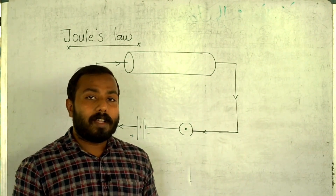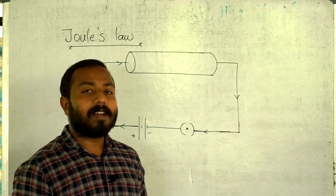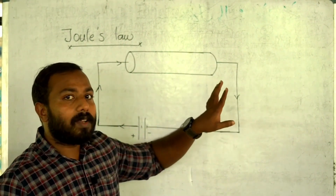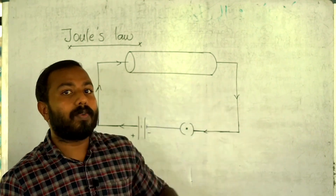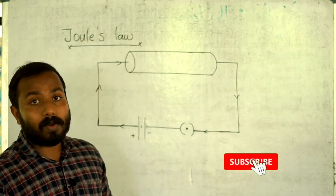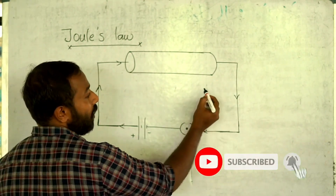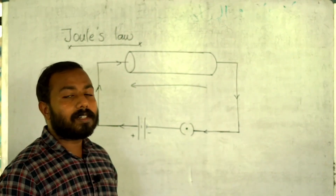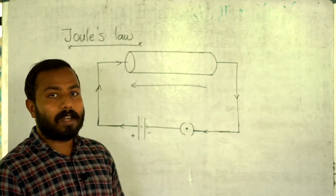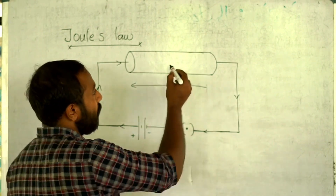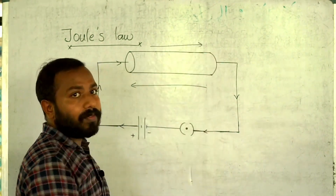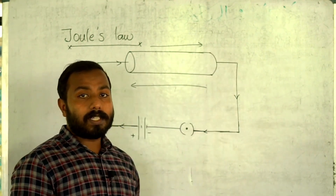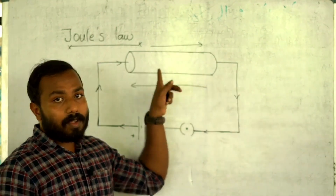What is electric current? It is the flow of electrons. When you switch on, the electrons will flow — but in the opposite direction to conventional current. The conventional current flows one way, while the electrons flow the other way.